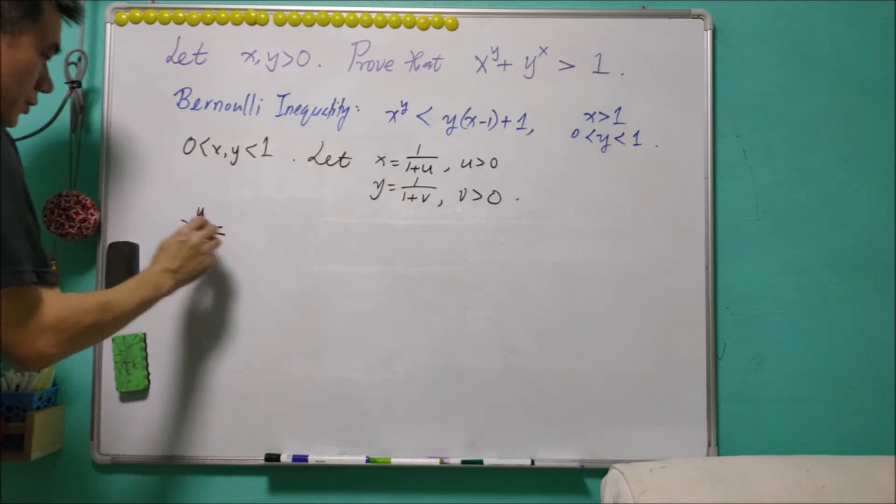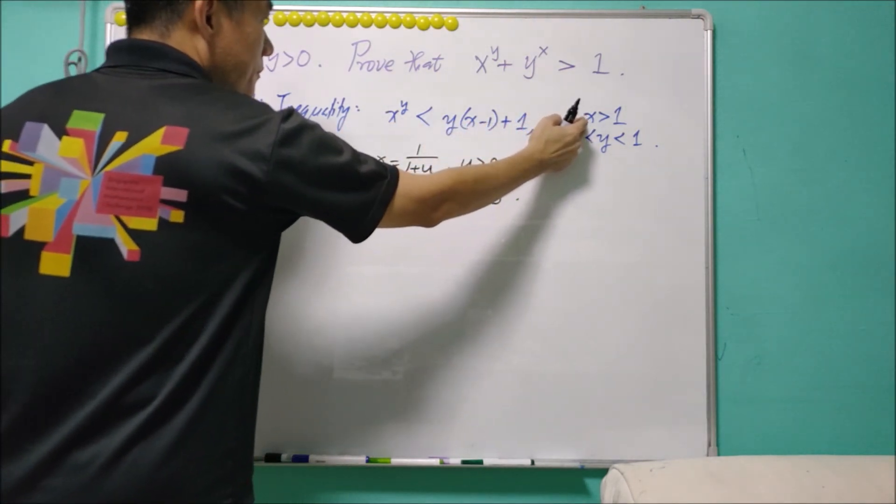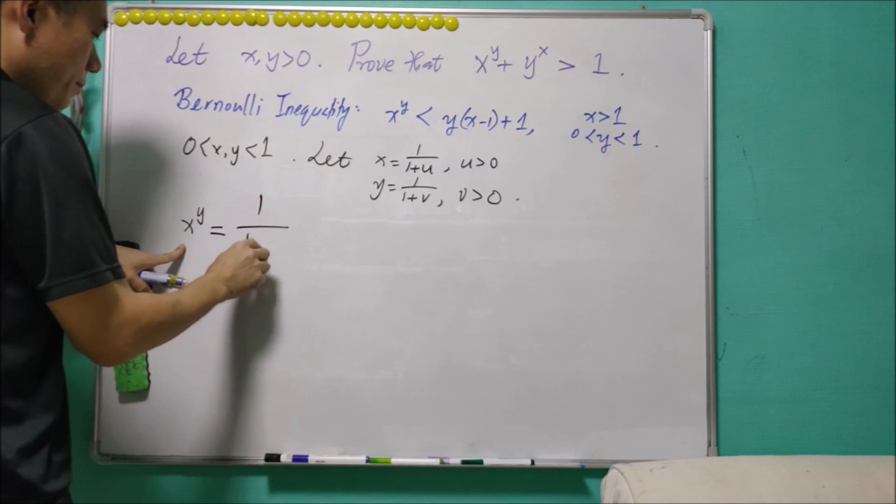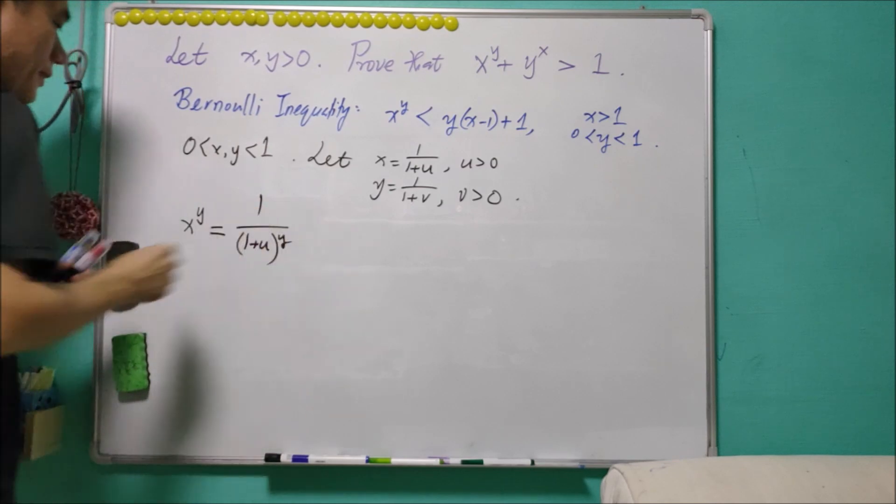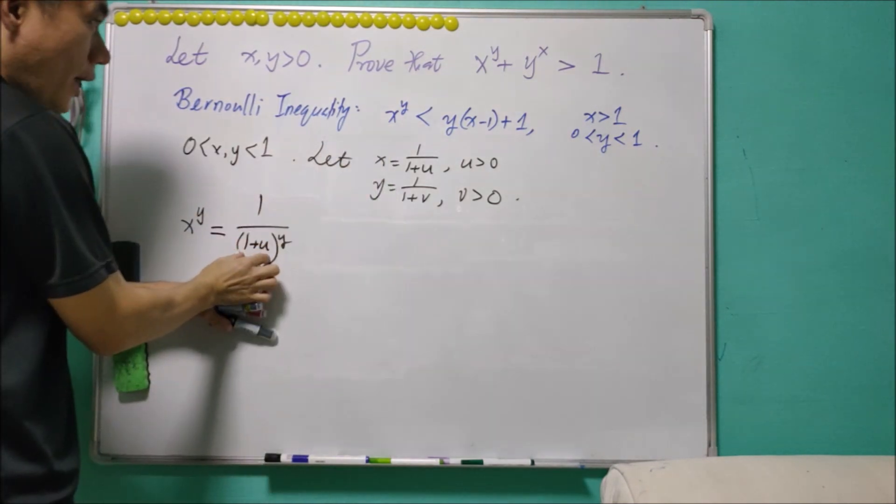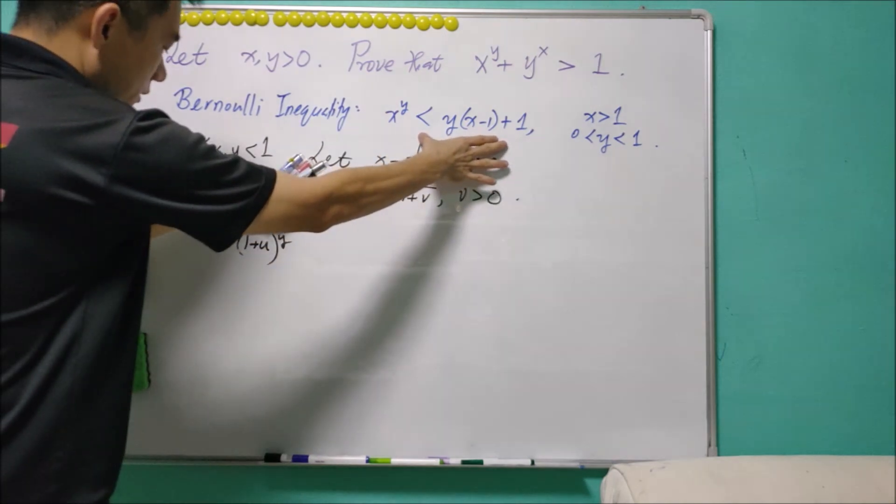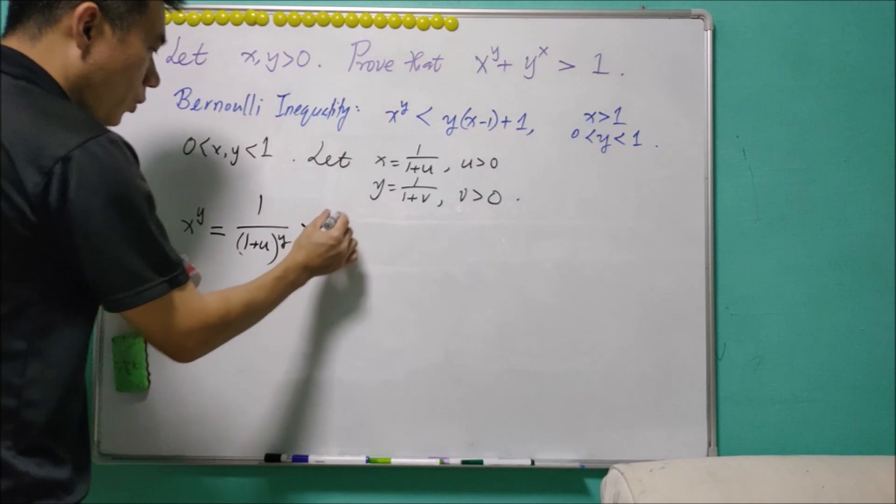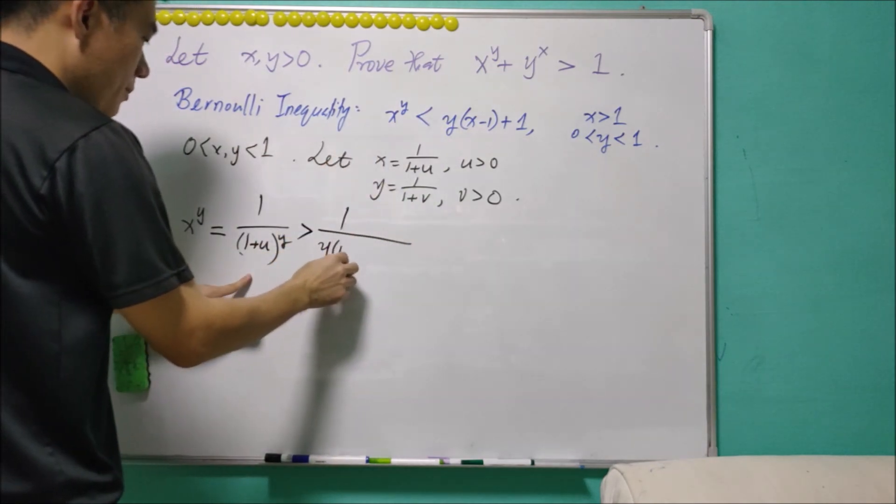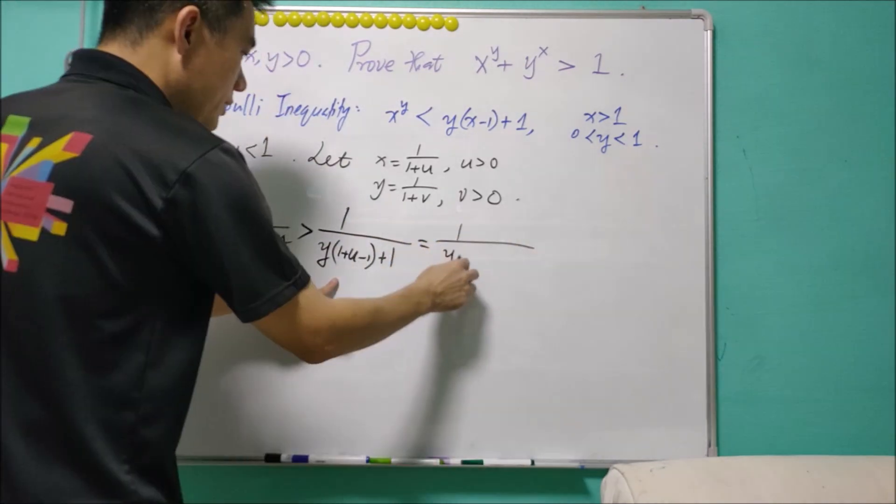x to power y will be equal to... Now note that in this case, we need x to be more than 1. But the x here is less than 1. So I will use it as 1 over (1 plus u) to the power of y. Okay. So this is the so-called new x here. This is greater than 1. And y is in between 0 and 1. The denominator itself will fulfill this inequality. So the overall will be greater than 1 over... y is still y. x is equal to 1 plus u minus 1 plus 1. And this is equal to 1 over (yu plus 1).